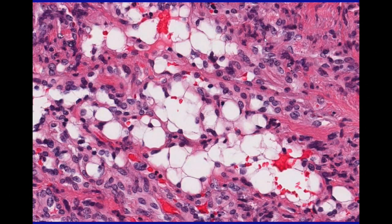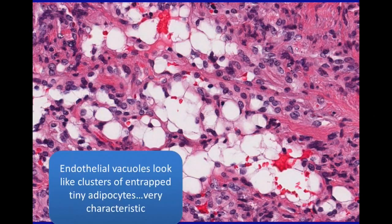I think this is very characteristic. I usually can find at least some areas in spindle cell hemangioma that look like this, and I've never yet seen this exact look in any other vascular tumor. So to me, this is a relatively specific finding — it's very useful. Keep that in mind; it's a nice clue.